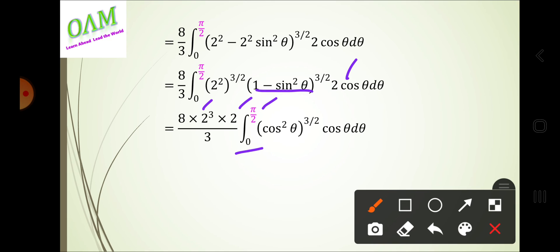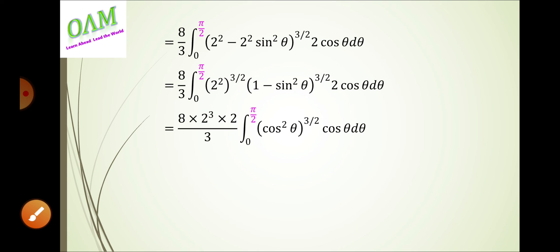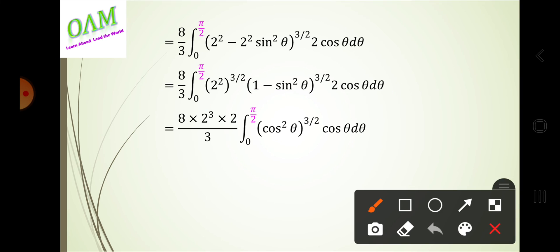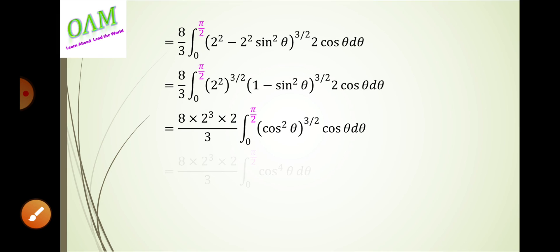Substituting: 1 - sin²θ equals cos²θ, so the power 3/2 applied to cos²θ gives cos³θ. Multiplied by cosθ dθ, this becomes cos⁴θ.